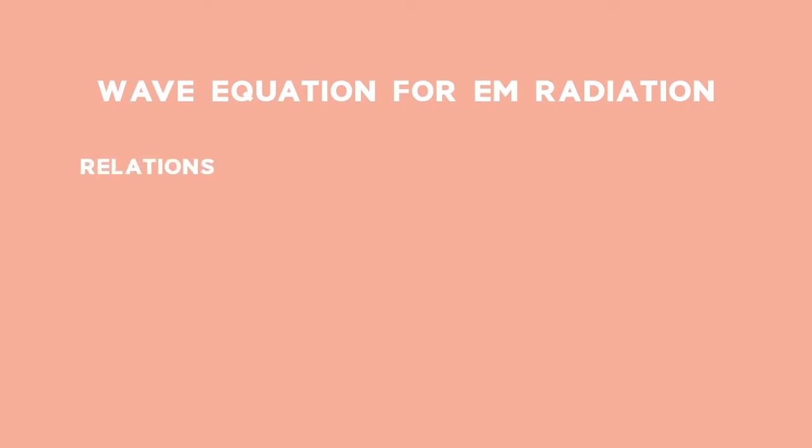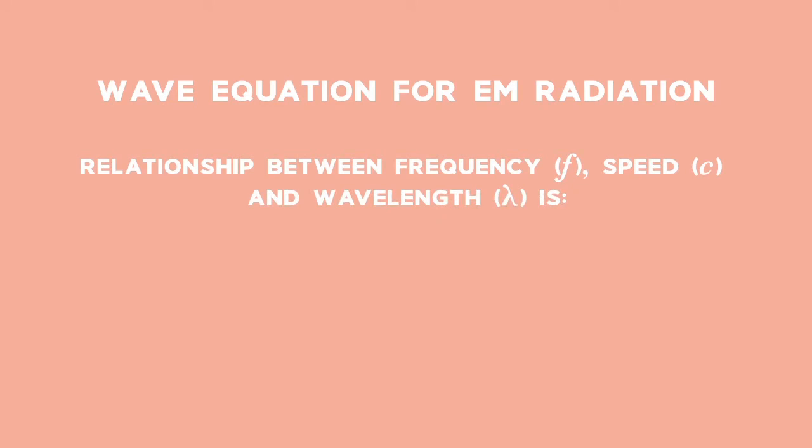Wave equation for EM radiation: All waves behave and can have calculations done with the wave equation. When we look at it in terms of EM radiation, nothing much changes except for the fact that we have a special symbol for the speed, C. So the speed of light is equal to the frequency multiplied by the wavelength.